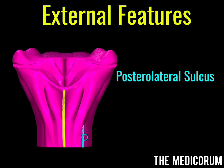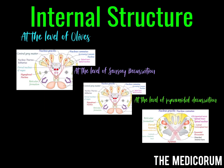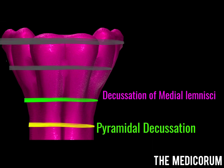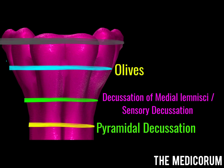We are done with the external features of medulla. We will now see the internal structure of medulla with the help of cross-sections taken at certain levels: the first at the level of decussation of pyramids, the second at the level of decussation of medial lemnisci, the third at the level of olives, and the fourth just inferior to the pons.